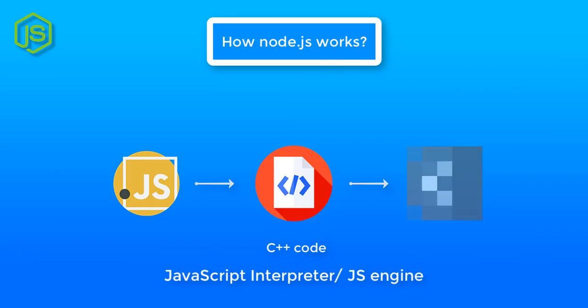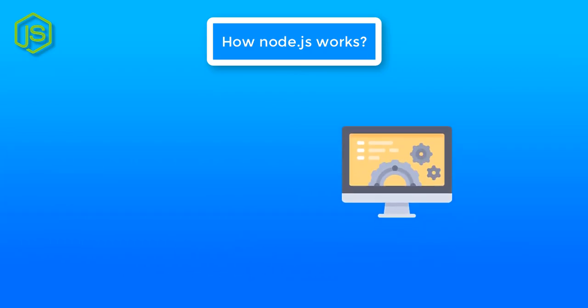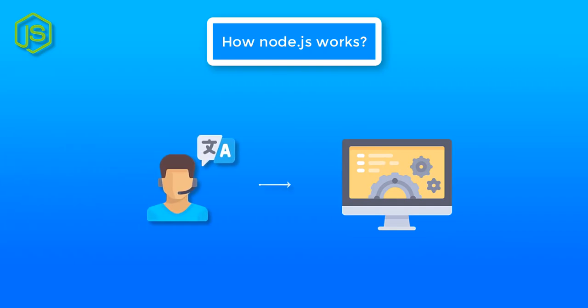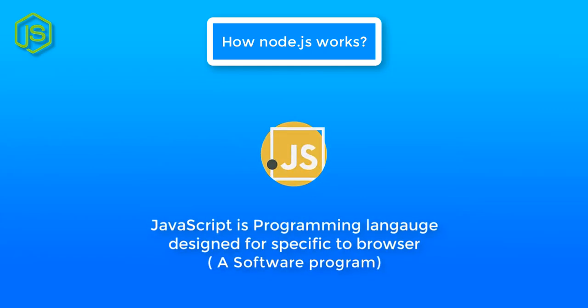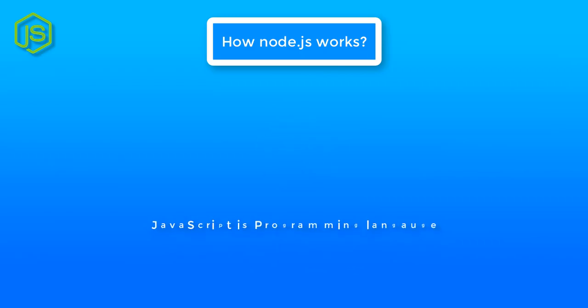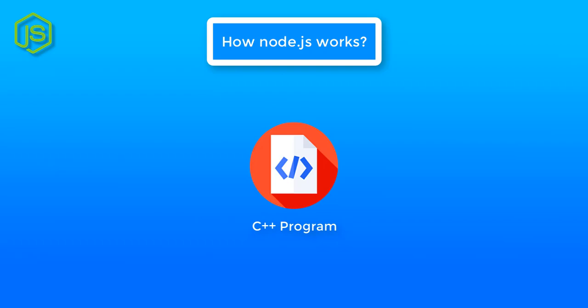Remember, the Node.js C++ program has a responsibility to take JavaScript code and convert it into machine code. What matters is that you give machine code to the machine — how you generate it doesn't really matter. But what about JavaScript? We all know JavaScript is not a fully featured programming language, so how can we use it for a computer system? This is where the Node C++ program comes in again.